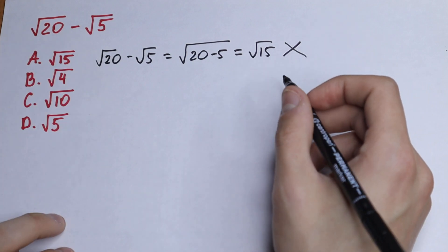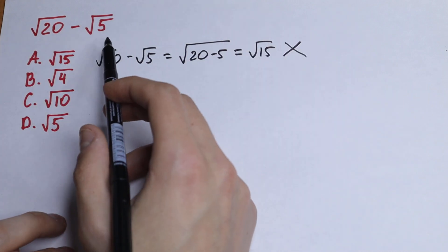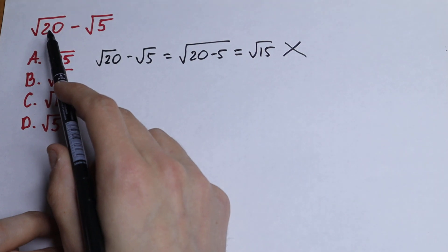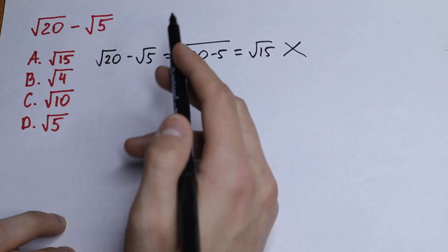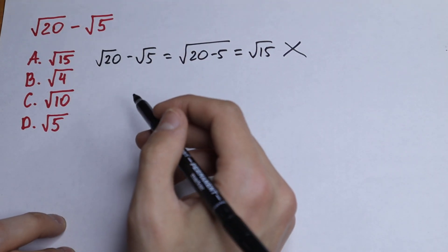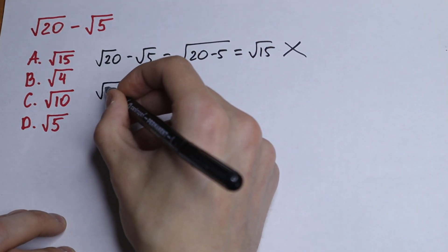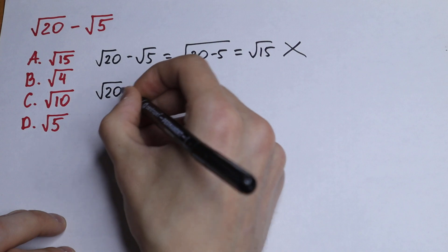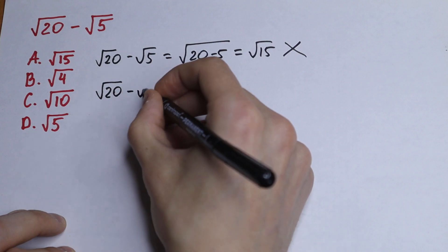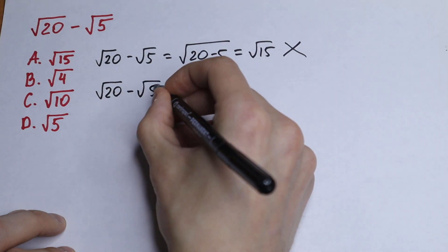So how can you do this correctly? Take a look right here — we have square root of 20 minus square root of 5. Let's work with this expression.